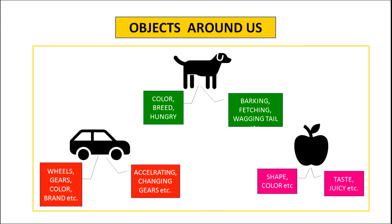For example, the attributes of a dog can be colour, breed, hungry, etc. and its behaviour can be barking, fetching, wagging tail, etc. If we take an example of a car, the attributes of a car can be wheels, gears, colour, brand, etc. and its behaviour can be changing gears, etc.